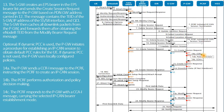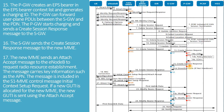Optionally, if dynamic PCC is used, the PGW initiates a procedure for establishing a PCAN session to obtain default PCC rules for the UE. The PGW sends a CCR-A message to the PCRF, instructing it to create an EPCAN session. The PCRF performs authorization and policy decision making, then responds to the PGW with a CCA message carrying the selected EPCAN bearer establishment mode. The PGW creates an EPS bearer in the EPS bearer context list, generates a charging ID, and can forward user plane PDUs between the SGW and the PDN. The PGW starts charging and sends a create session response message to the SGW, which forwards it to the new MME.